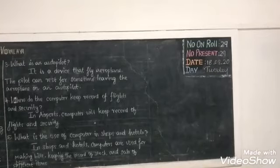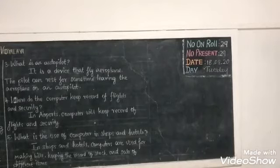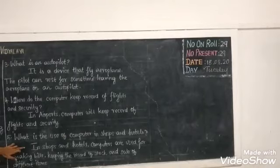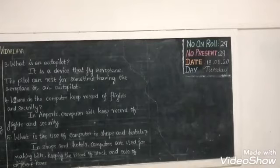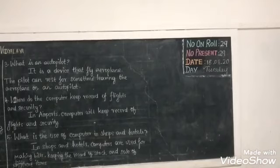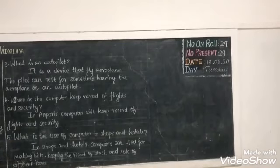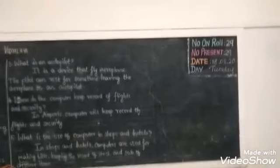The fifth question is: what is the use of computer in shops and hotels? In shops and hotels, the computer is mainly used for making bills for what we have purchased. They give the bills using the computer and keep records of the store — what they have bought from others, how many products they sell, and the sale of different items. Everything is maintained in records using the computer.